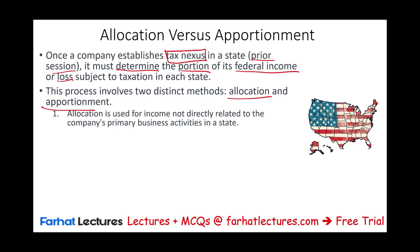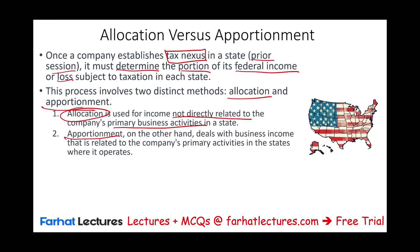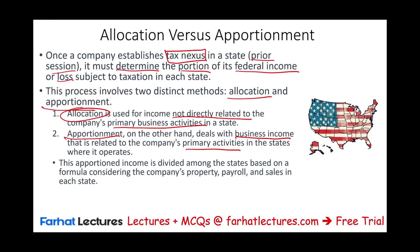Allocation is used when the income is not directly related to the company's primary business activities in a state — we're discussing investment income. Apportionment, on the other hand, deals with business income that's related to the company's primary activity in the states where it operates. The apportionment income is divided among the states based on a formula considering the company's property, payroll, and sales in each state.